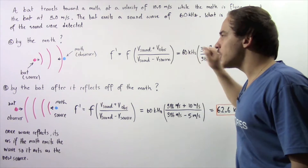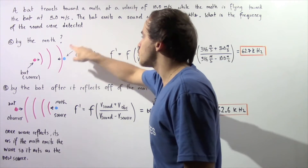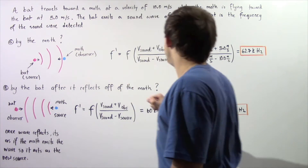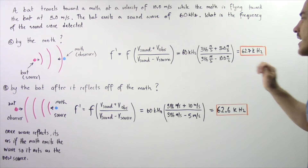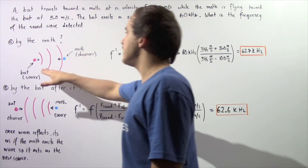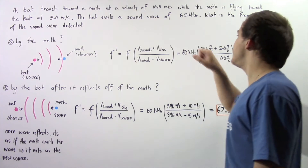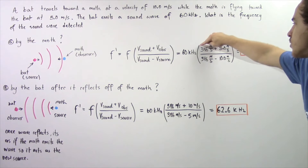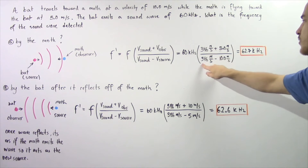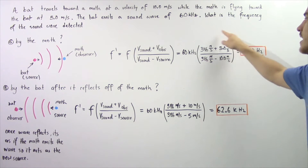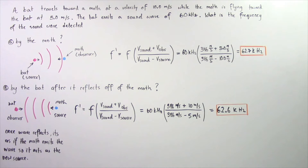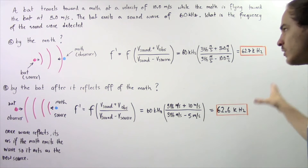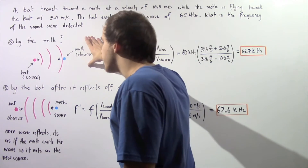The velocity of the observer is 5 meters per second since the moth is the observer, while the velocity of the source — the bat — is 10 meters per second. So we compute 346 plus 5 divided by 346 minus 10; the meters per second cancel, and we get approximately 62.7 kilohertz as the frequency detected by the moth.